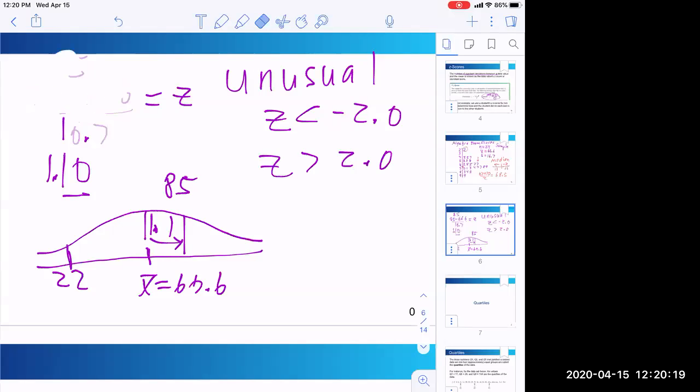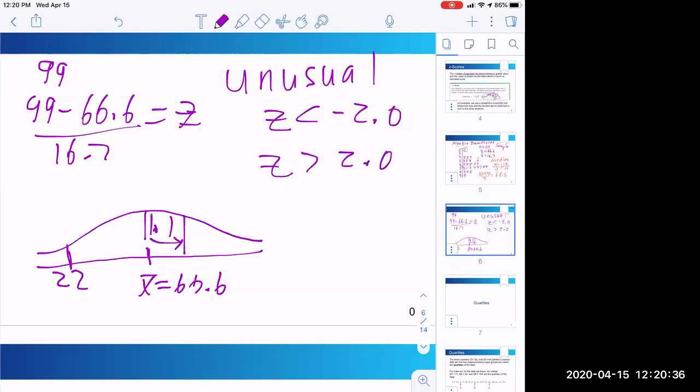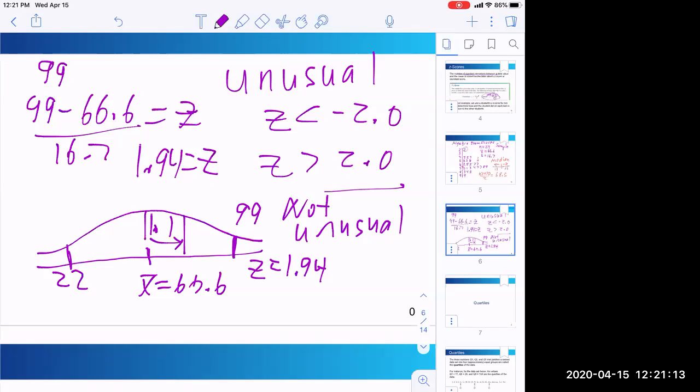So let's look at 99. That's like our other possible outlier thing. So 99 minus 66.6 divided by 16.7. I get a z-score of 1.94. Okay, so 99 is out here. Notice it's not as far away from the mean as 22. Because it's not quite over 2. So if we strictly look at it greater than 2.0, we would say not an outlier, not unusual. Although I think if you made an argument that it seems unusual, you could probably make a strong argument that way. But since it's not greater than 2, we'll go with it's not unusual.